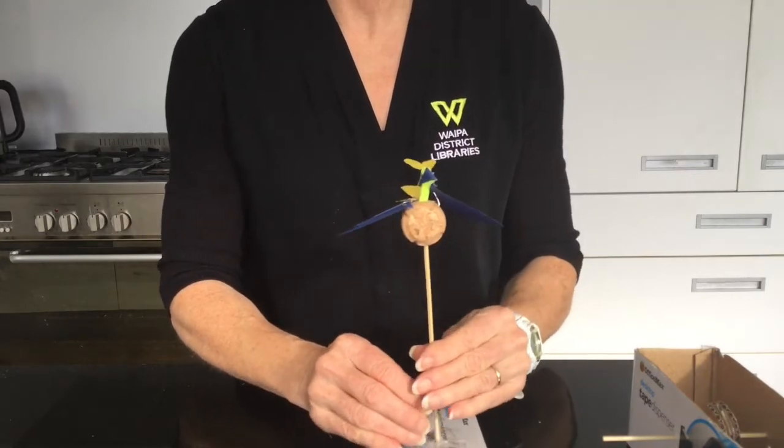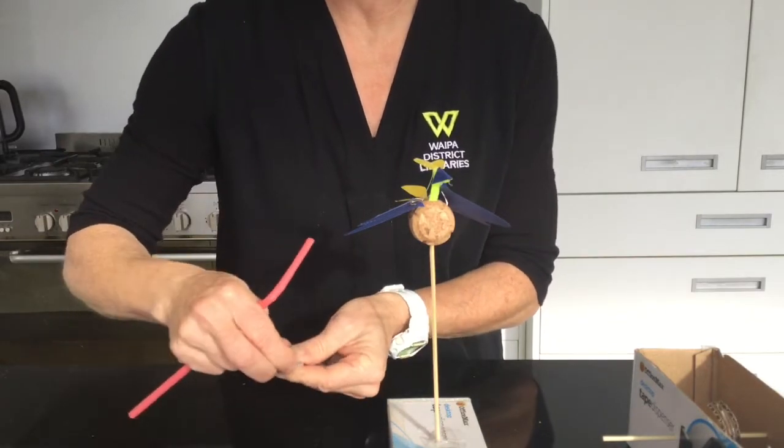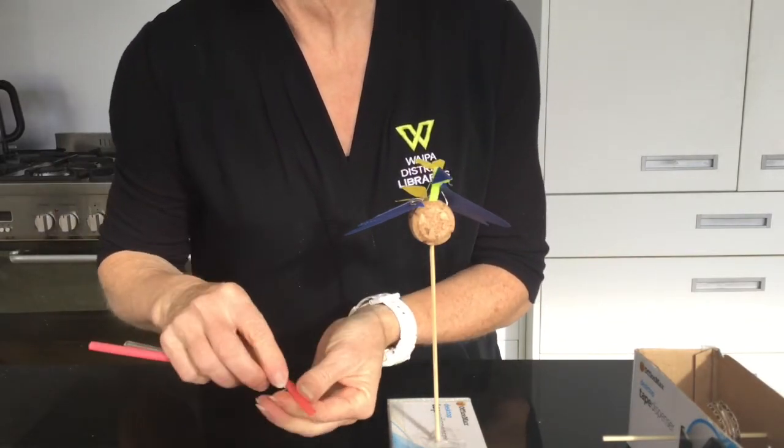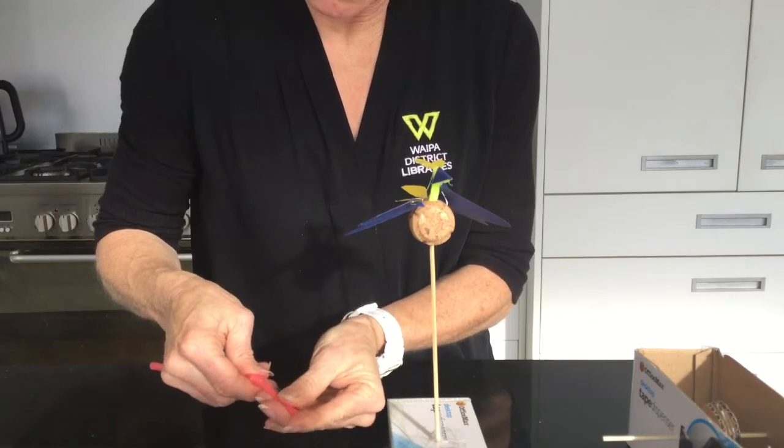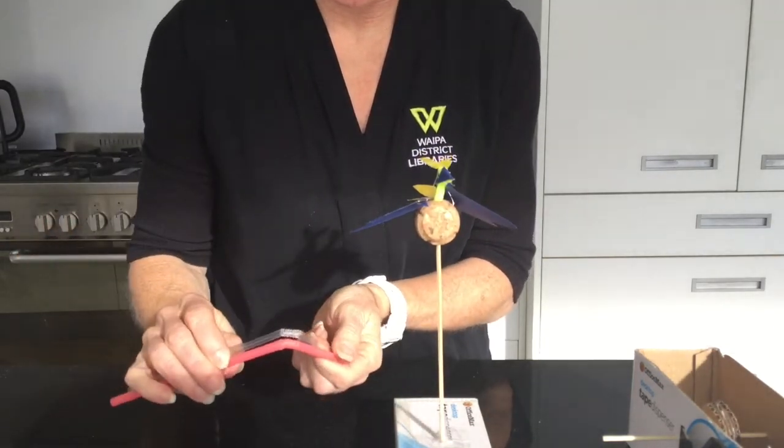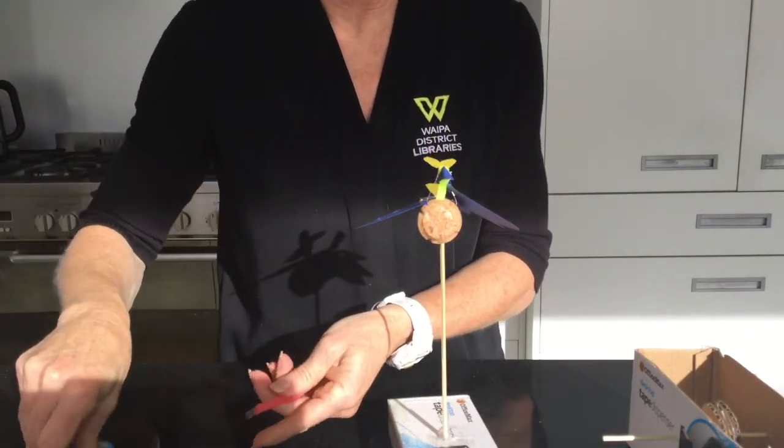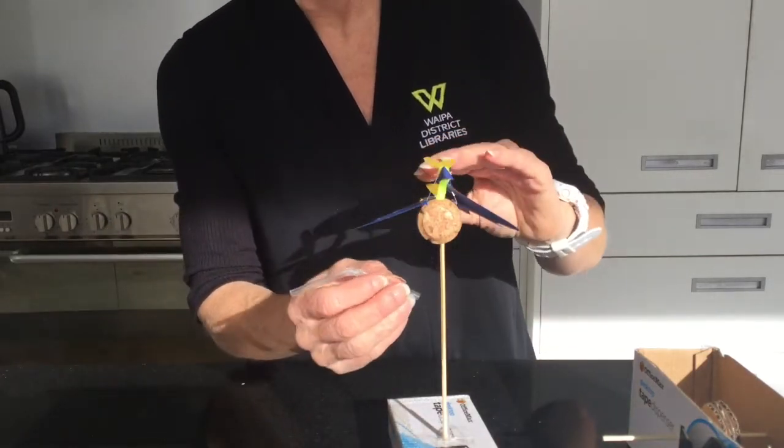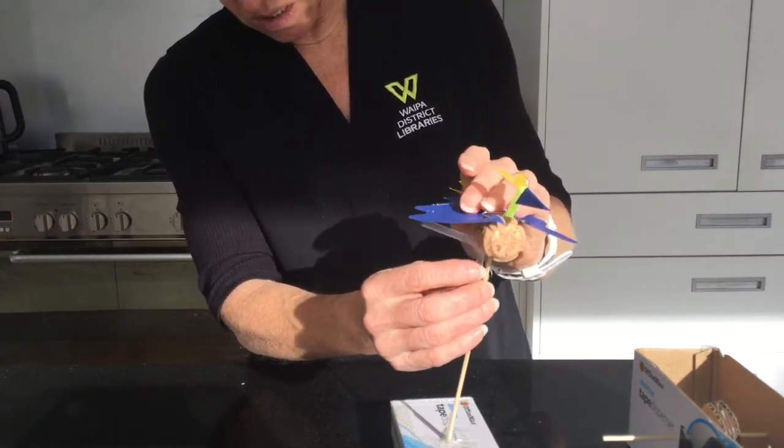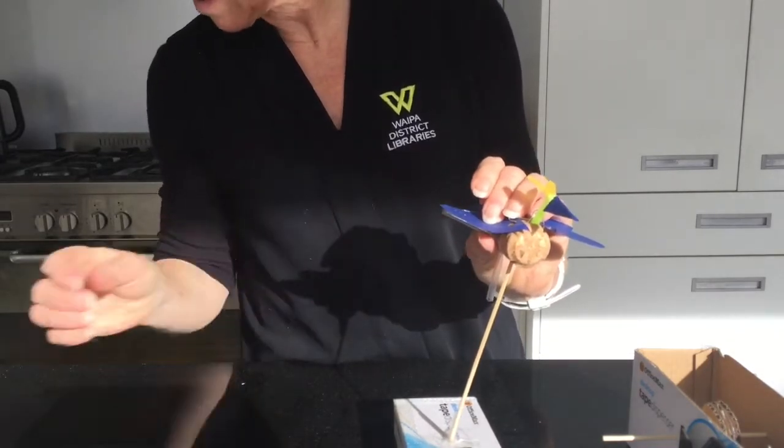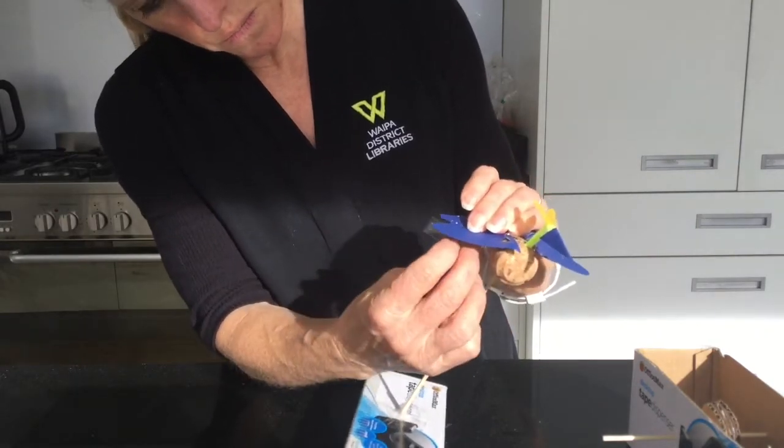So now we need to take our two sections of our bendy straws. We need to cut the ends off that. We're going to bend them like so. We'll make them the same length at this end as well. And what we're going to do is we need to tape the underside of the wing to the straw.